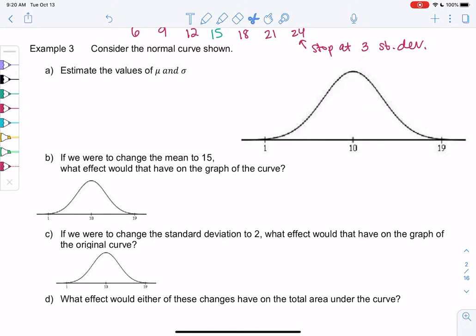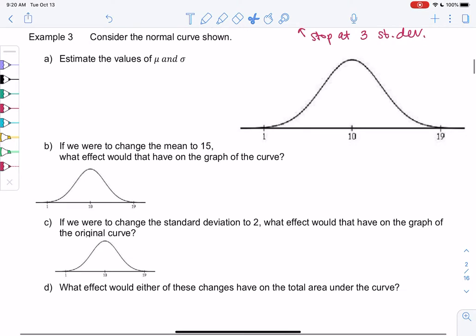This time we're going to go backwards. We're going to estimate the mean and standard deviation based on the curve. So for part A, let's estimate the value of the mean. I notice 10 is right in the middle, so that's my mean.